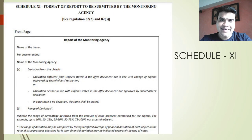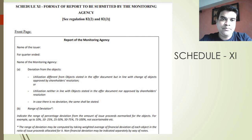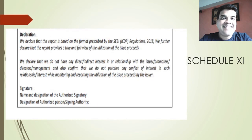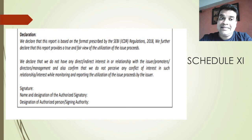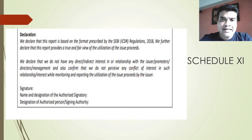Let's look at the format of Schedule 11. This is the report of the monitoring agency. It contains the name of the issuer, the period for which the report is being made, the name of the monitoring agency, the deviation from the objects, and the range of the deviation. A declaration by the monitoring agency is important, wherein it declares that the report is based on the format prescribed by SEBI ICDR Regulations and provides a true and fair view of the utilization of the proceeds of the issue. There is also a disclaimer that they have no interest in the company and no conflict of interest, along with the name and designation of the authorized signatory. This is on the front page of the report.